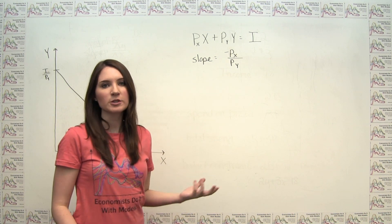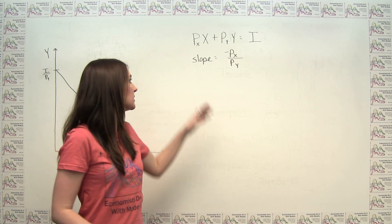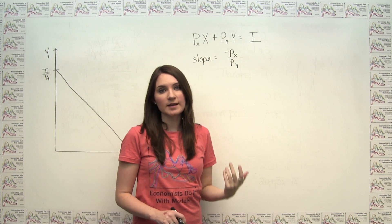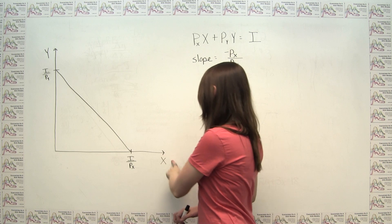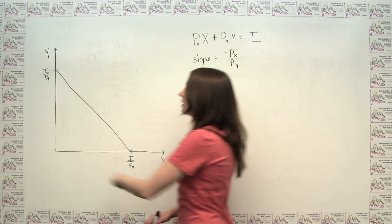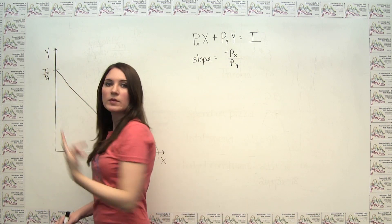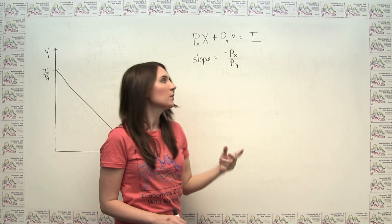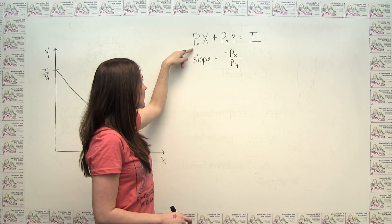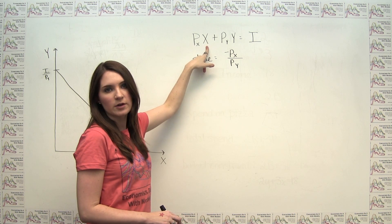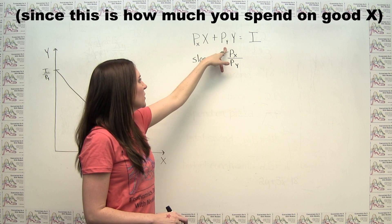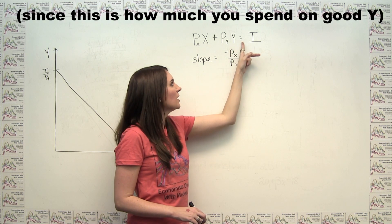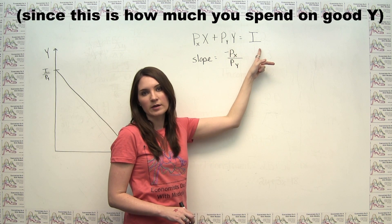We can think of a more generalized version of the budget constraint in this way. If we're taking any two goods, x and y, and we're putting good x on the x-axis and good y on the y-axis, then we can represent the budget constraint by the price of the good on the x-axis times the quantity of the good on the x-axis, plus the price of the good on the y-axis times the quantity of the good on the y-axis, has to be equal to our income.